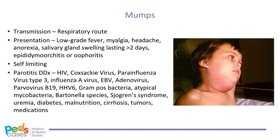Epididymo-orchitis can develop up to six weeks after parotitis. Five percent of women with mumps infection can develop oophoritis, which can present as lower abdominal pain and vomiting. Other complications of mumps infections include pancreatitis, thyroiditis, or abnormal renal function. It is important to remember a differential for parotitis, which includes the viruses of HIV, coxsackievirus, parainfluenza virus type 3, influenza A virus, Epstein-Barr virus, adenovirus, parvovirus B19, and HHV6. Some non-viral causes of parotitis are gram-positive bacteria, atypical mycobacteria, and Bartonella species. Parotitis can also occur in the setting of Sjögren's syndrome, uremia, diabetes mellitus, malnutrition, cirrhosis, tumors, or some medications.